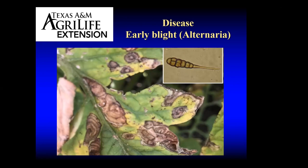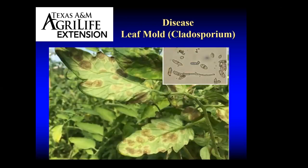Another disease many homeowners have probably seen in their tomatoes, especially under humid conditions, is leaf mold caused by Cladosporium. You'll see this grayish, frothy growth of the fungus on the underside of the leaves, due to probably too much canopy, rain, humidity, nutrition — many factors that might be ideal for this leaf mold. The upper right-hand picture is a photo of Cladosporium spores under a microscope. I would probably say most tomato growers have encountered this disease.